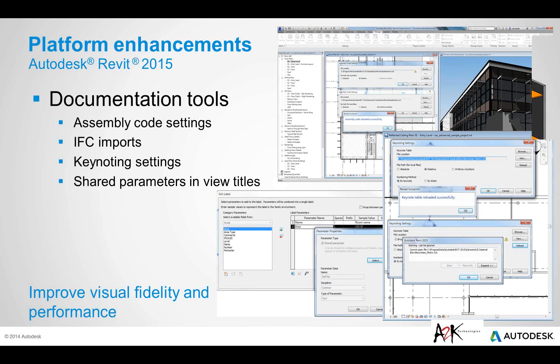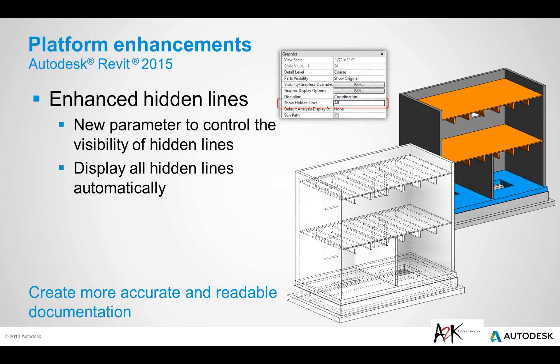Enhanced Hidden Lines is another new feature. There is a new parameter to control the visibility of hidden lines, which displays all hidden lines automatically. There were some bugs with the way it was displaying hidden lines depending on which discipline was selected for the views. They have updated that, and you now have a parameter specific to the view — 'show hidden lines' — with some options as to what you actually show.